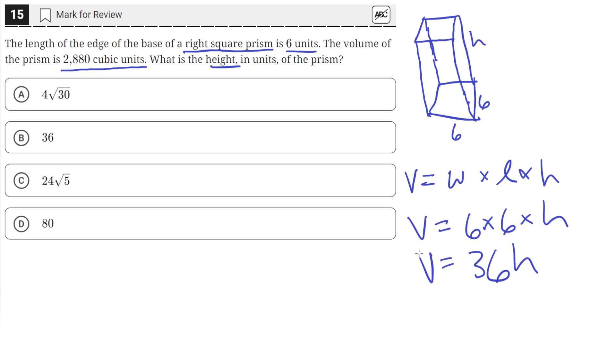And we're told that the volume is 2,880. So we can rewrite our volume equation to be 2,880 equals 36h. And now we can simply divide both sides by 36 to solve for h, the height.